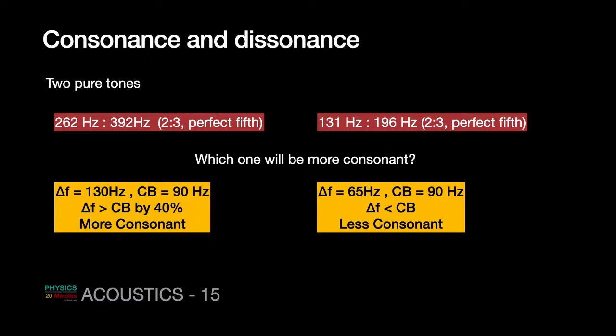So consonance and dissonance is now well understood in terms of frequency difference. The question remains: why does the frequency difference produce these results? You can either comment or we can have it in the post-lecture discussion.